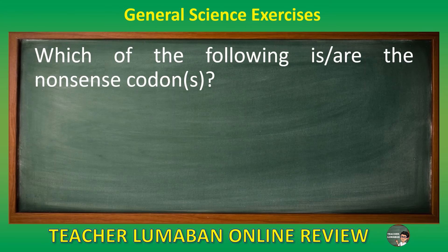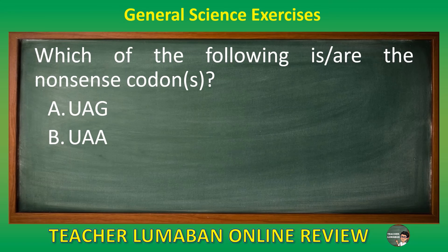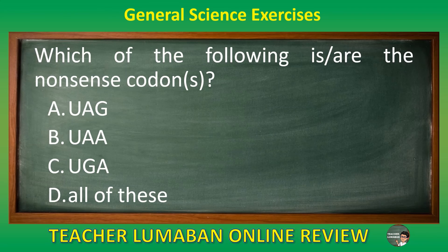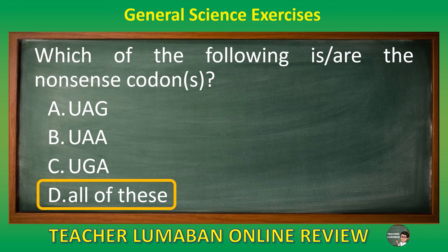Which of the following are the nonsense codons? Letter A UAG. Letter B UAA. Letter C UGA. Letter D all of these. The correct answer is letter D, all of these. The nonsense codons are UAG, UAA, and UGA.